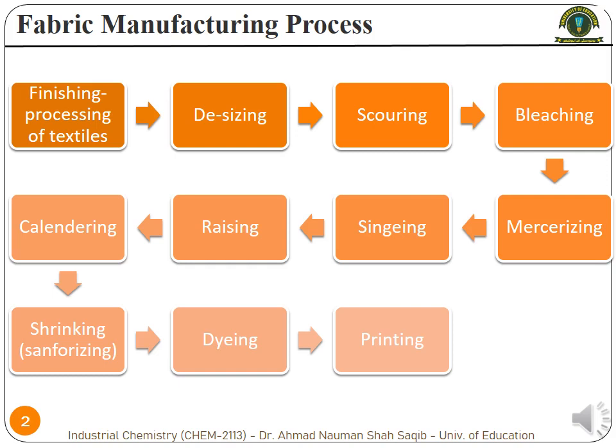We will move towards the processing of textile products — how they are processed. We already discussed about the types of manufacturing of different fabrics, and now it's time to discuss about the processing — how it is actually processed. Processing of textile products includes many different steps, and here is the flowchart of those steps. We will discuss all of them in the coming slides.